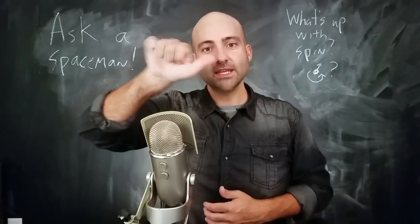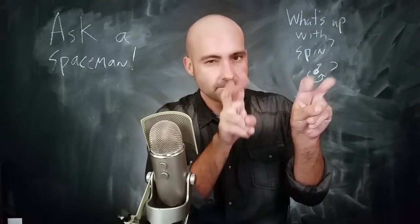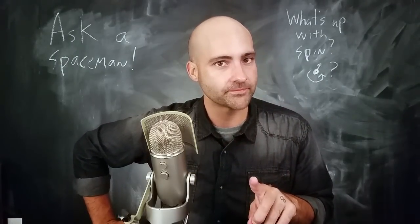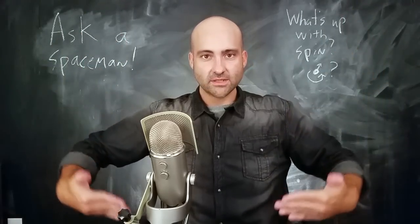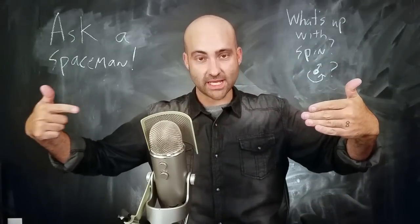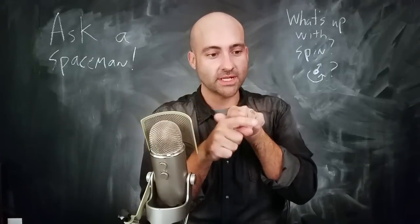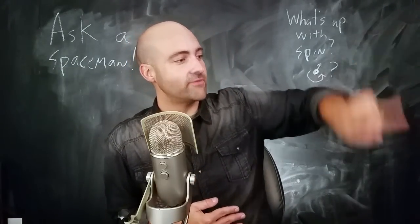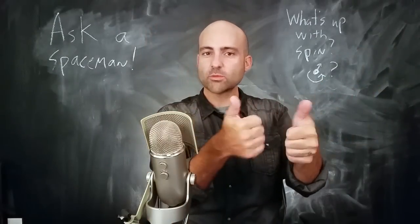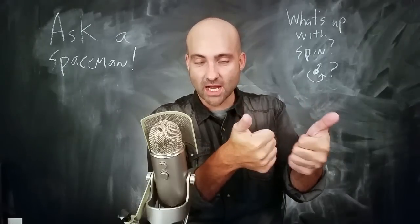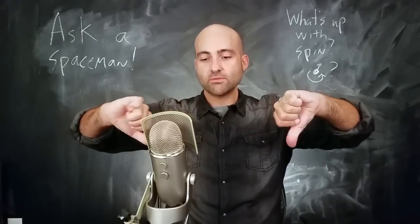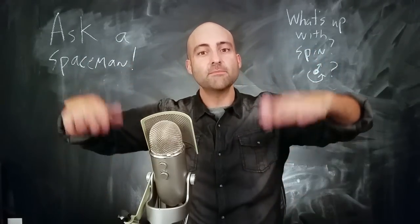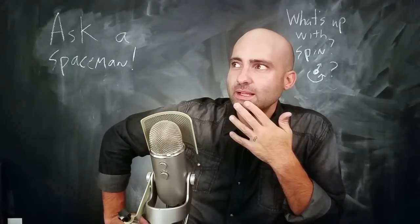Any random electron can have any random spin direction it wants. The amount of spin — like how fast it's spinning — is always the same, but it could point in any direction. And we have limits to how well we can measure that direction. If you set up a magnetic field pointing up and down and shoot your electrons through it, it will split that group of electrons into an up and a down. These electrons had spins that were pointing up-ish — maybe a little bit up, maybe a lot up — and this other group deflected down were spinning down-ish.